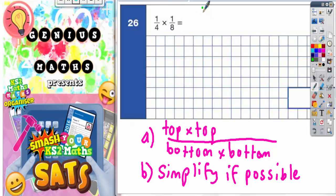Top times top, 1 times 1 is 1, and bottom times bottom, 4 times 8 is 32. So we've got an answer of 1 over 32.